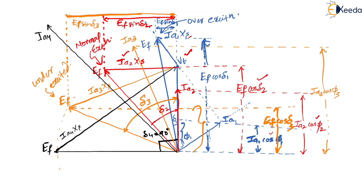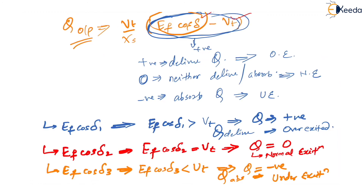So whenever active power output is changed, you can observe over-excitation, normal excitation, and under-excitation as different cases. We have now seen both cases for an alternator connected to an infinite bus — varying steam power input and varying excitation. A similar analysis will be done for a synchronous motor in the next session. Thank you.